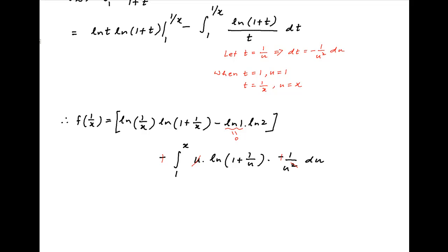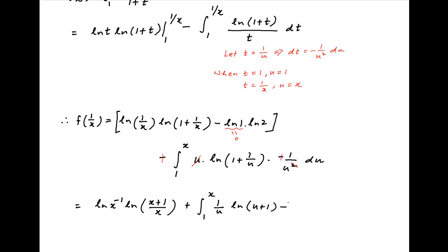Now, ln(1) = 0, so that term vanishes. Therefore f(1/x) can be written as ln(x)⁻¹ times ln((x+1)/x), plus the integral from 1 to x of (1/u) times ln((u+1)/u) du. We replace ln((u+1)/u) with ln(u+1) − ln(u).